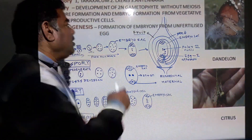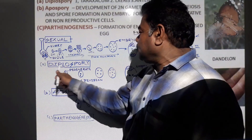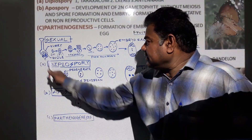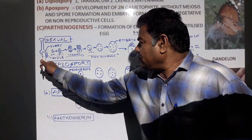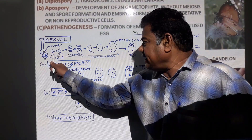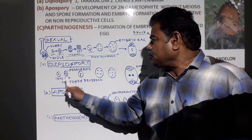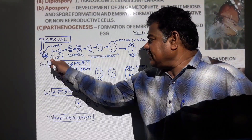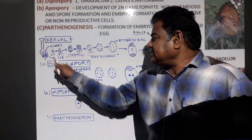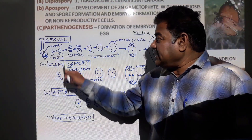Apomyxis is of three types. In Diplospory, the seed present in the ovule is diploid. The first cell from which gametogenesis starts is diploid — both in sexual reproduction and in Diplospory. But in sexual reproduction this cell undergoes meiosis, while in Apomyxis this cell undergoes mitosis cell division, not meiosis.